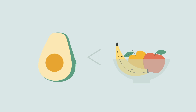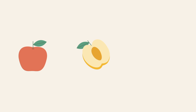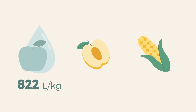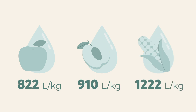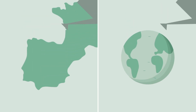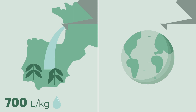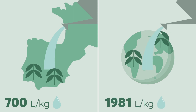For example, apples need 822 litres per kilo, nectarines need 910 litres per kilo, and cereals such as maize can use up to 1,222 litres per kilo — more than double that of avocados. In southern Spain, the water-related needs of avocados are well below the world average of 1,981 litres per kilo.